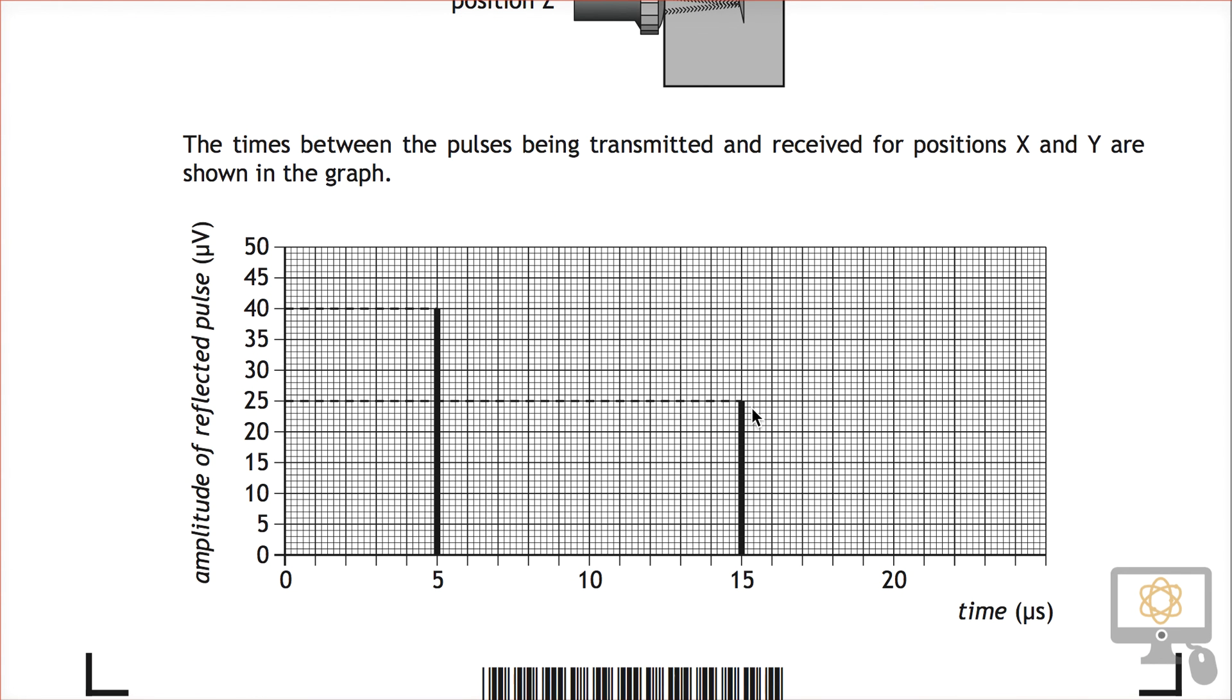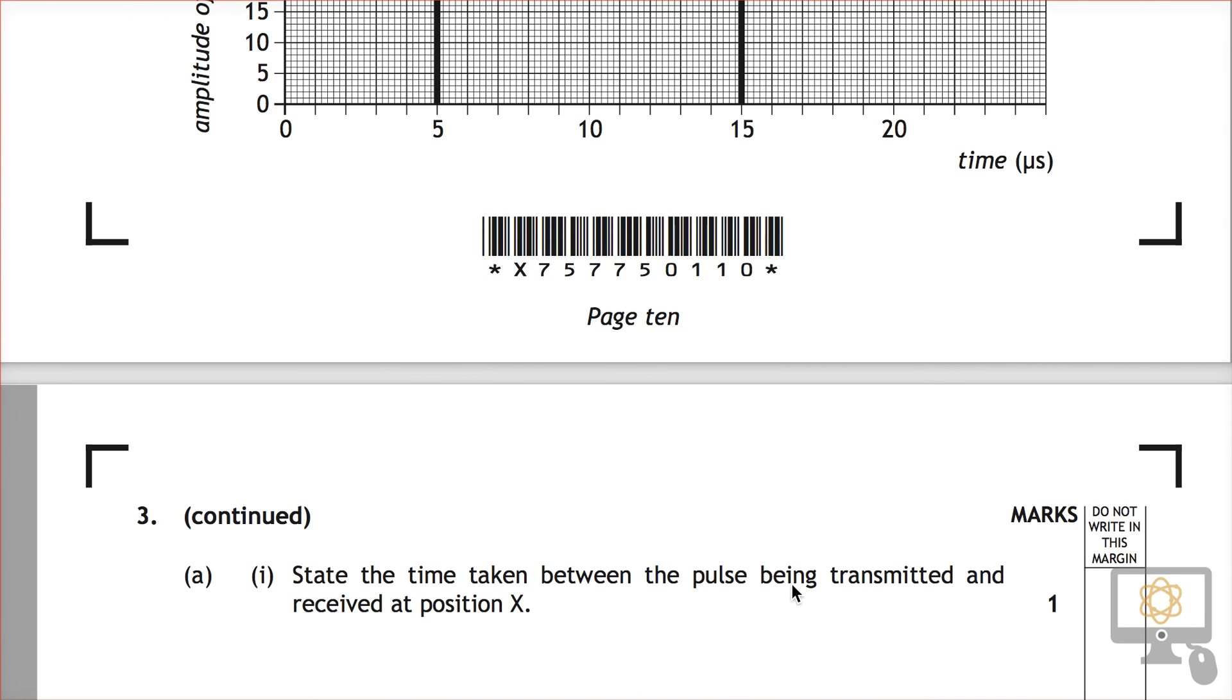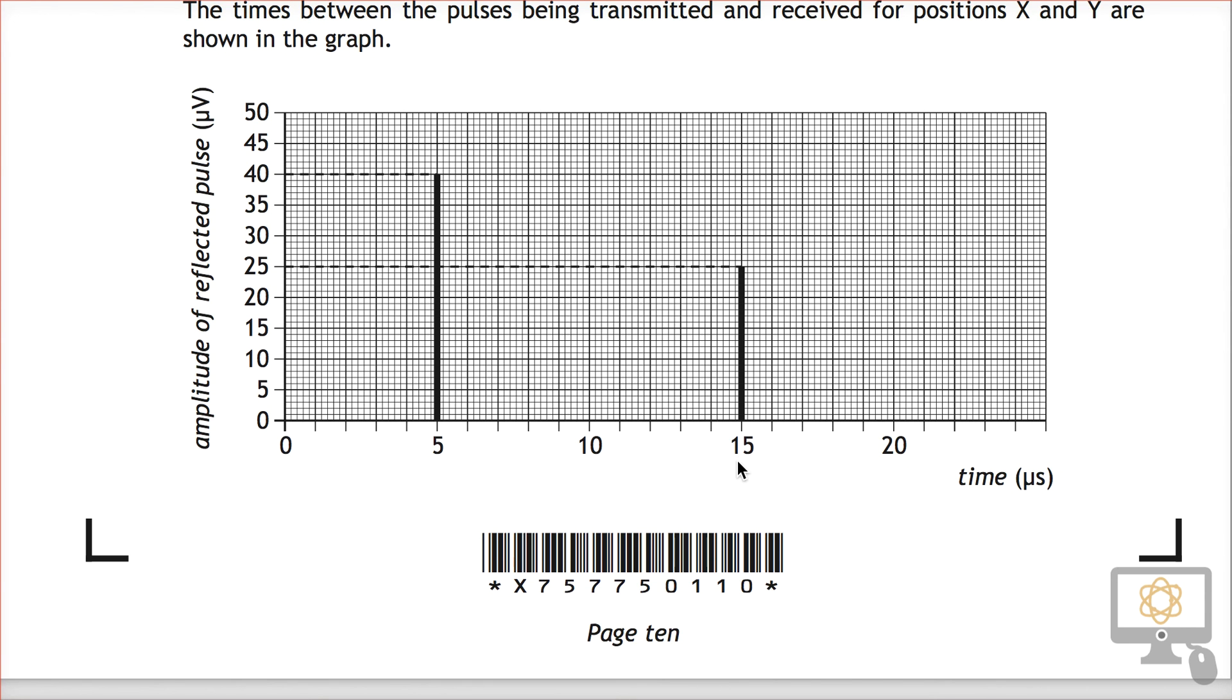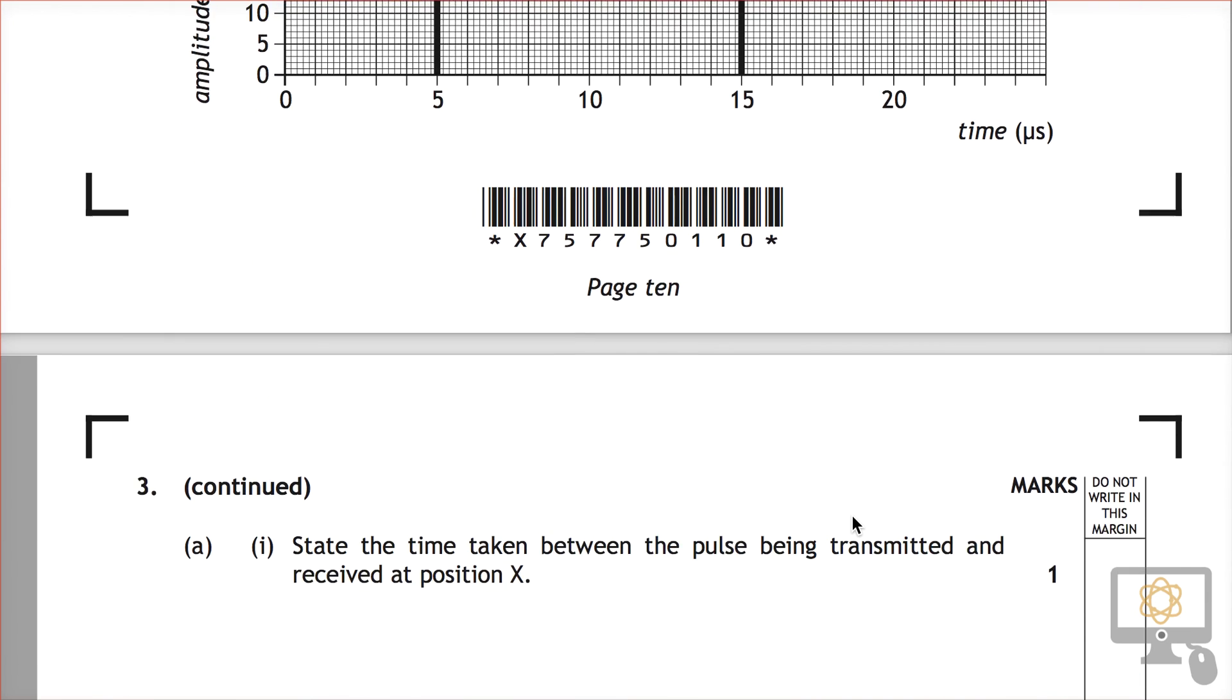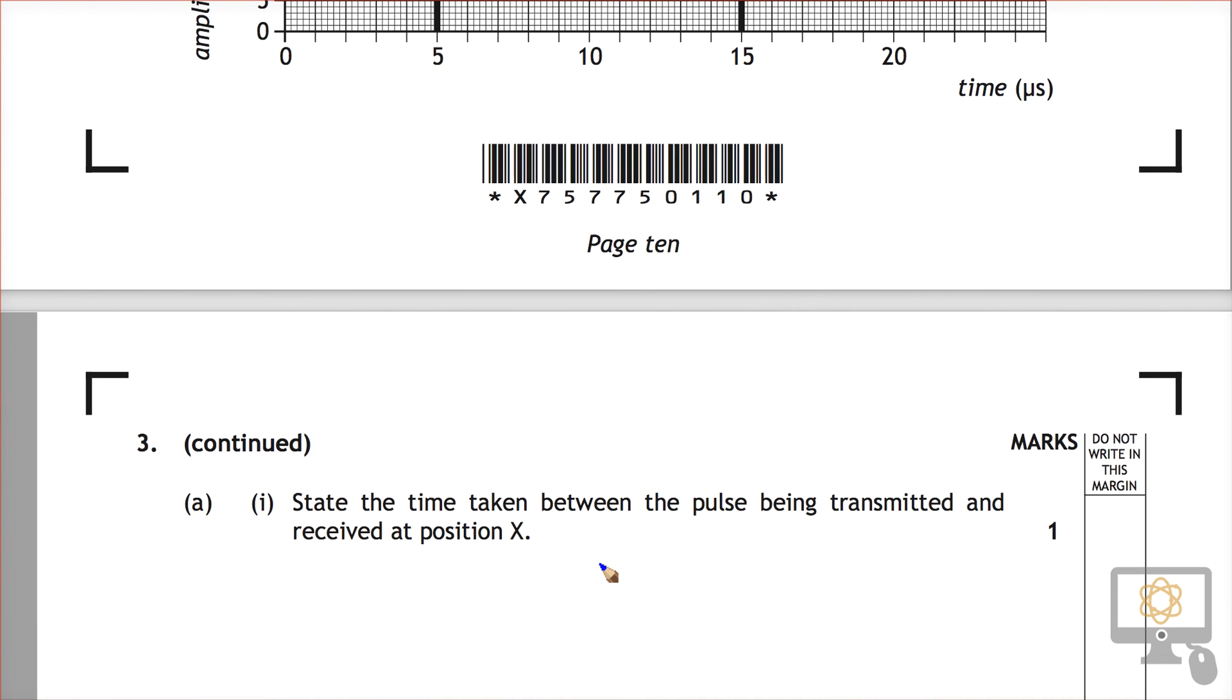So the time taken between the pulse being transmitted and received is 15, what are the units? Microseconds. So we'll write that in right here. 15 microseconds and that's our answer.